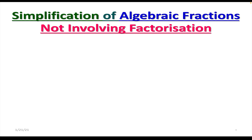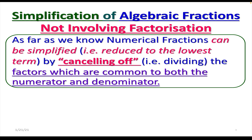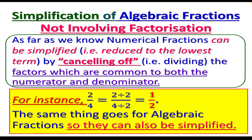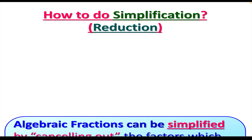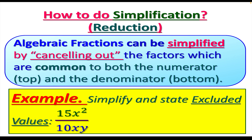Now let's talk about simplifying algebraic fractions. Remember that in algebra it's all about simplifying. Normal numerical fractions can be simplified — reduced to lowest terms — by canceling out the common factors from the top and bottom. For instance, 2 over 4: since 2 and 4 share the common factor 2, dividing both by 2 gives one half. The same idea applies to algebraic fractions.